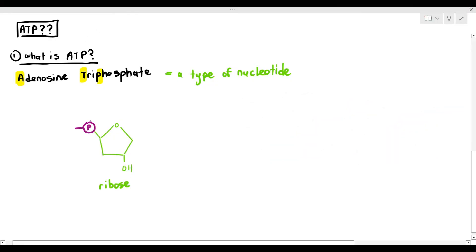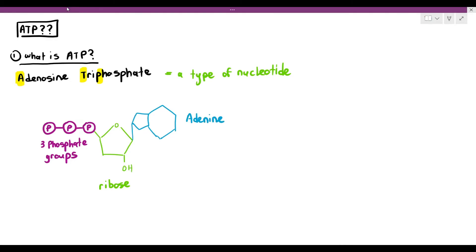But ATP is a little bit weird in which it actually has a particular sugar known as the ribose. How do I know it's the ribose sugar? Because in carbon number 2, it has the OH group. And it also has a particular base known as adenine, which is a purine base, represented by the two nitrogenous rings.